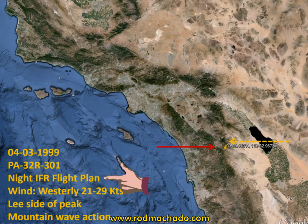In particular, if you have a downdraft generated by winds of, let's say, 40 to 45 knots on the leeward side of a mountain, it might be wise to request a higher altitude rather than operating at the base of the MEA.